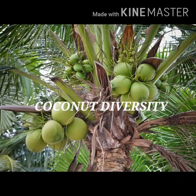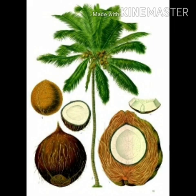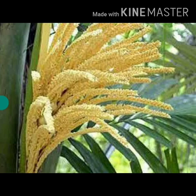In this video we are going to see about coconut diversity. The fruit consists of three layers: endocarp, exocarp, and mesocarp. Exocarp is the green and smooth outermost layer. Mesocarp is the middle flesh layer of the coconut. The endocarp is the hard and woody layer surrounding the seed.